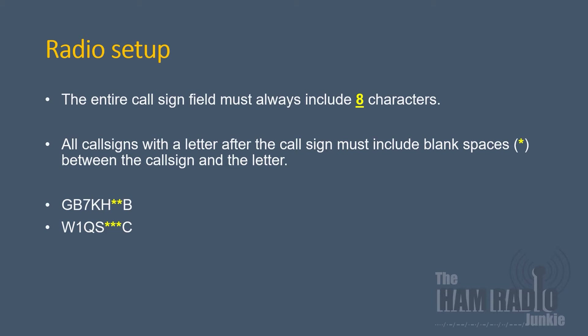It's important to know which port a repeater operates on because without entering this correctly, you will be unable to access the repeater. It's also important to know that in the settings of Your, RPT1, and RPT2, where a callsign is entered, you need to ensure that it actually totals 8 characters. For instance, GB7KH on port B has two spaces (shown here by an asterisk), and W1QS on port C has three. I'll ensure that all spaces have an asterisk so you know where to put them.